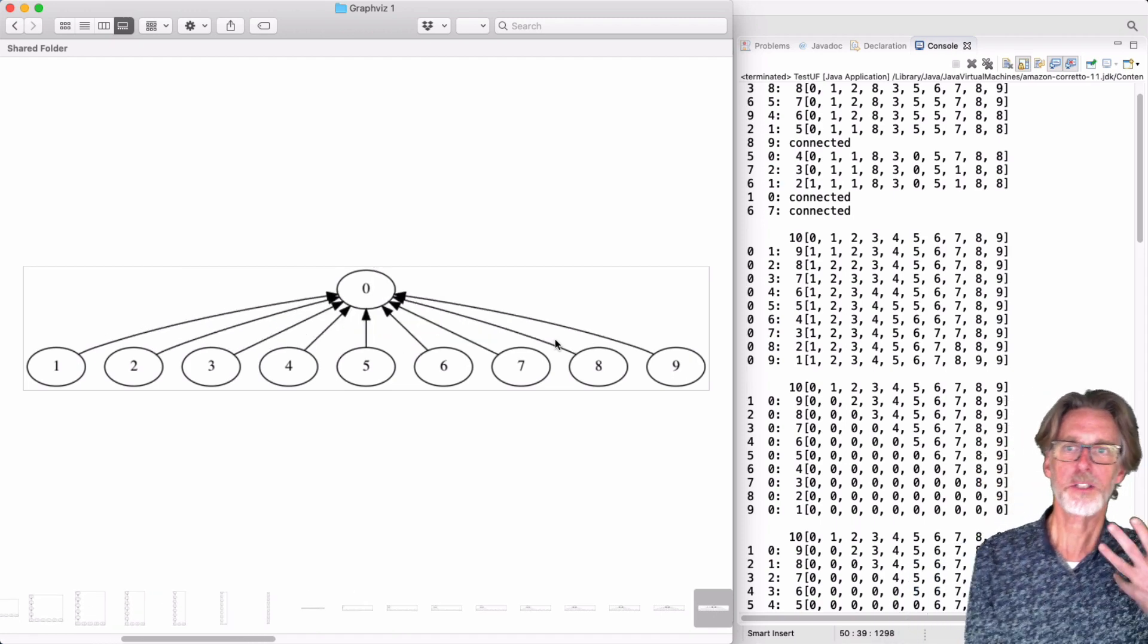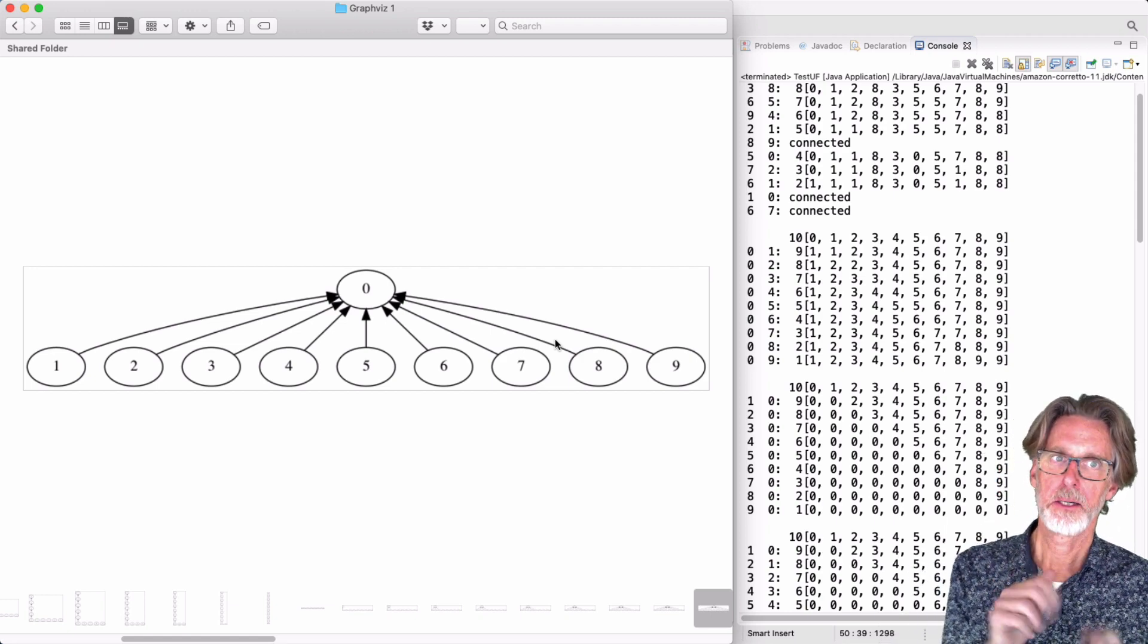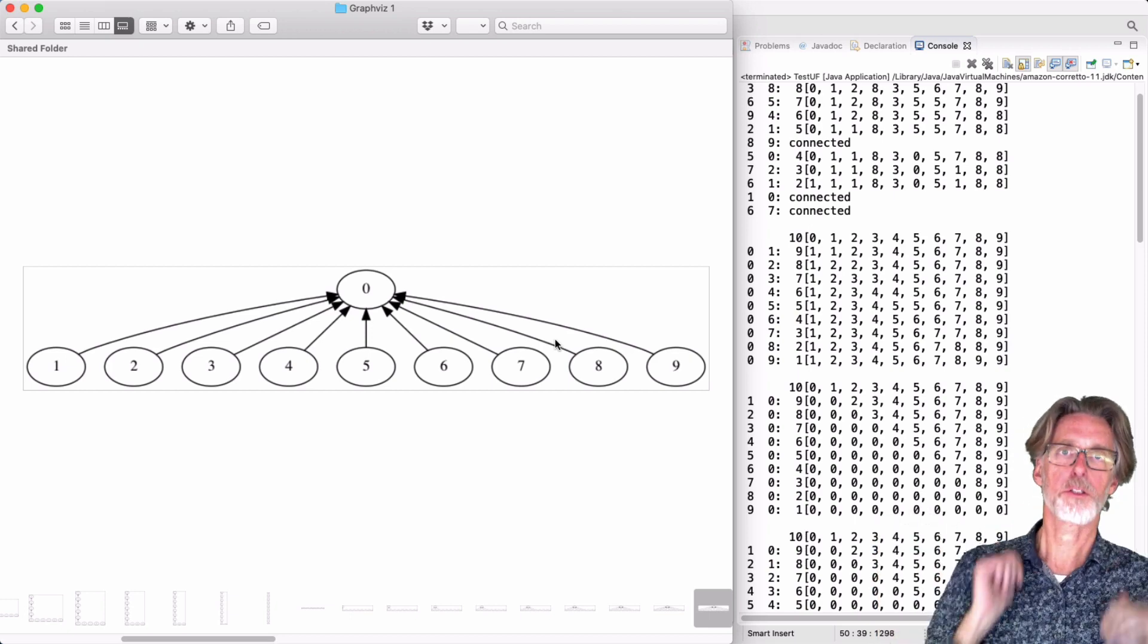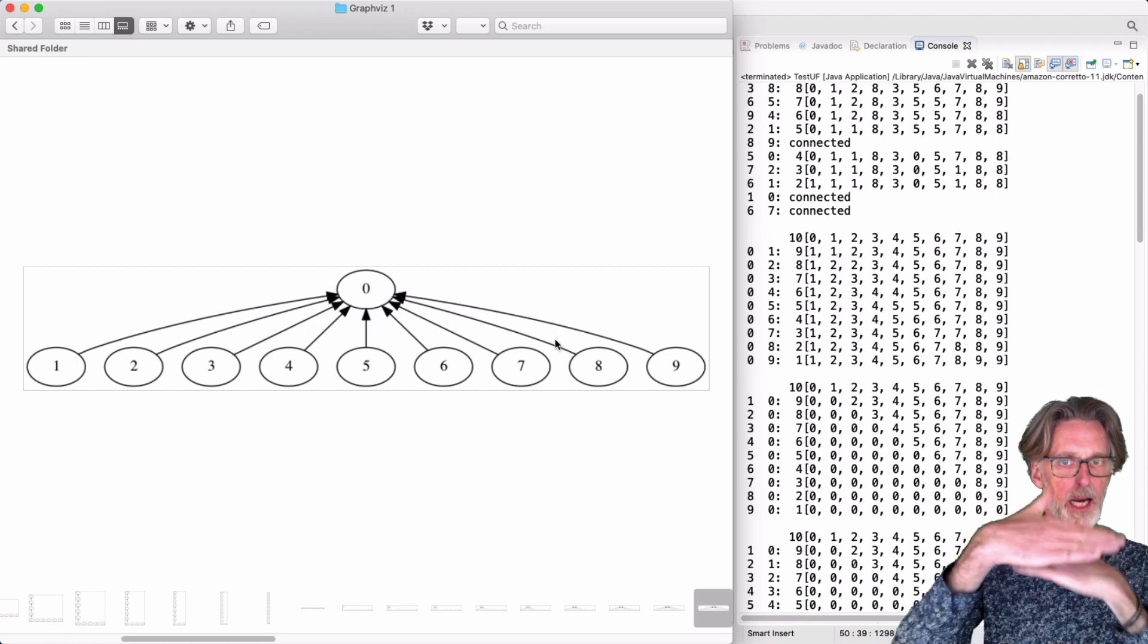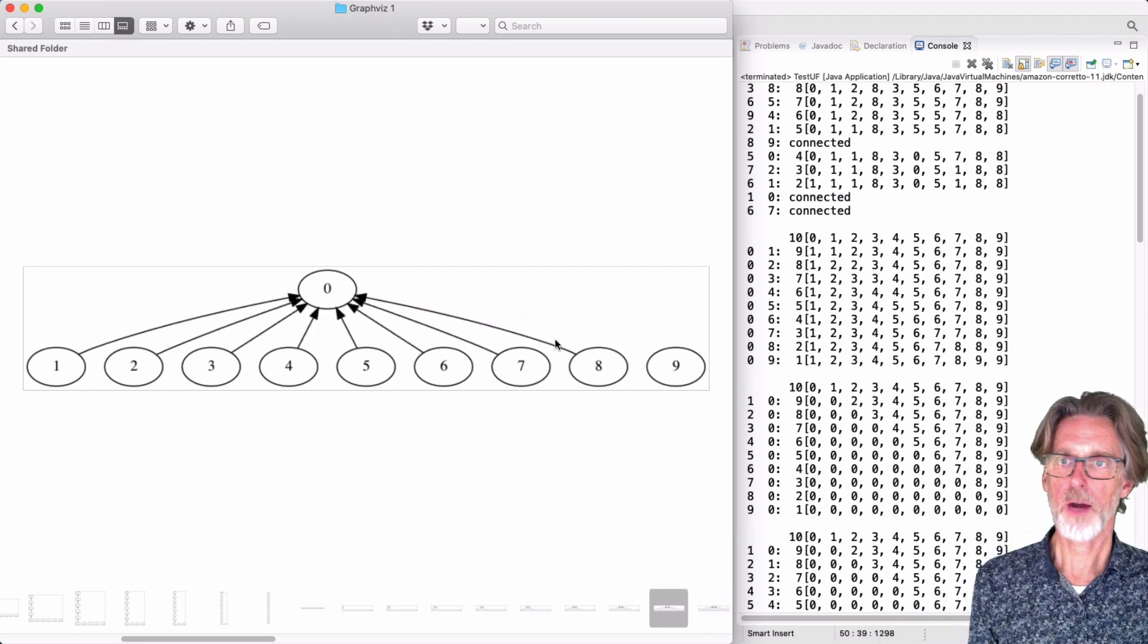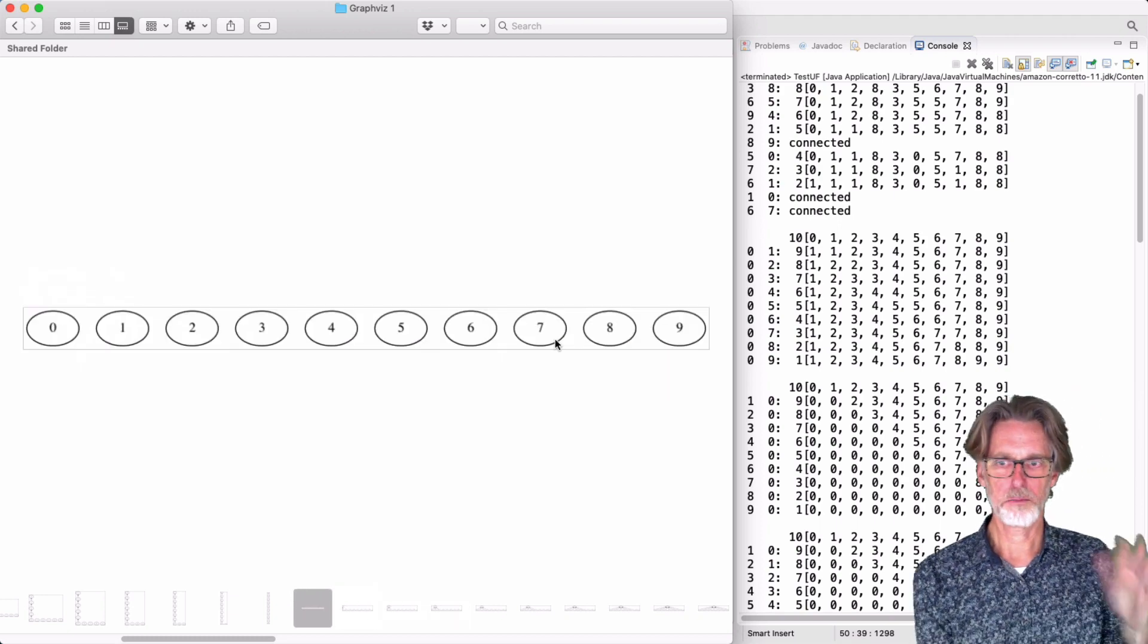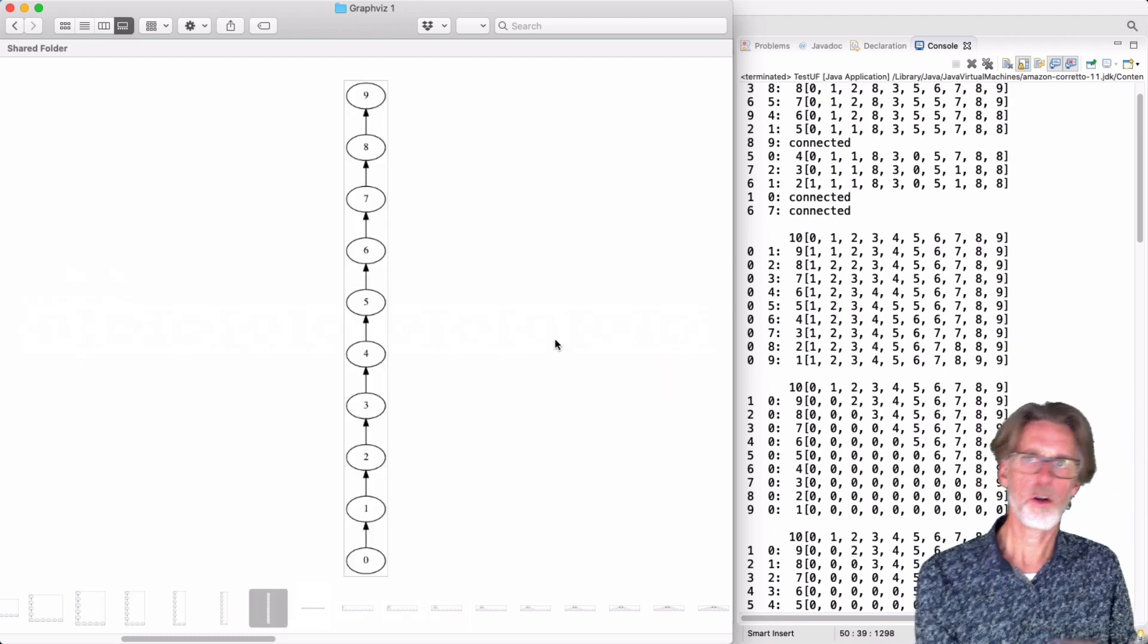Now, what's interesting to note here is the big difference between quick find and quick union. Quick find always gives us the same level structure no matter what we do. We're getting always everybody immediately below their champion. With quick union instead, you can get radically different results. So I can get this nice flat picture, or I can get this very tall, long picture.